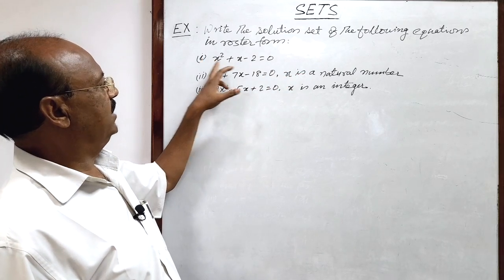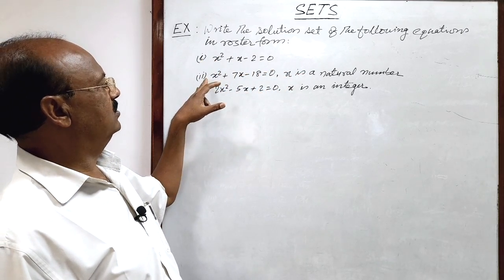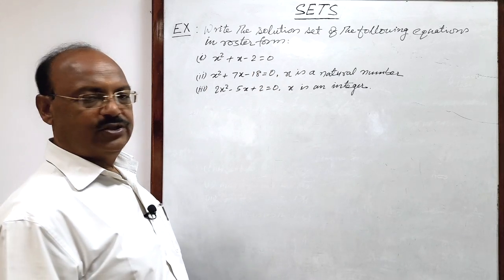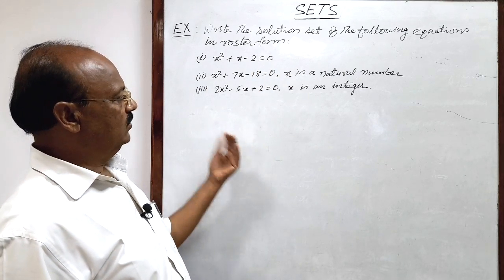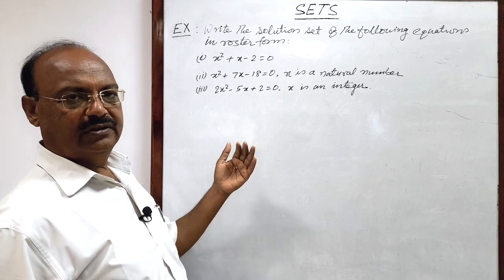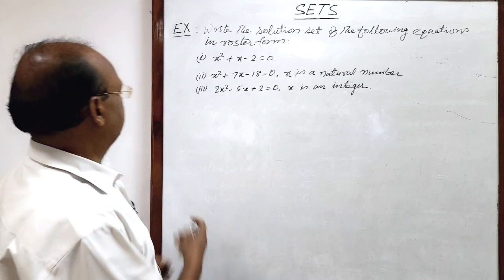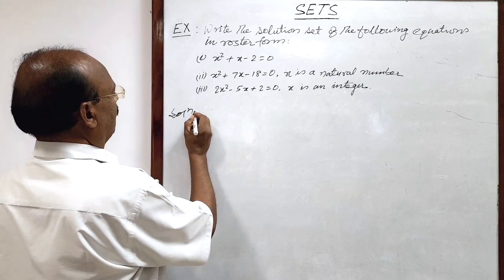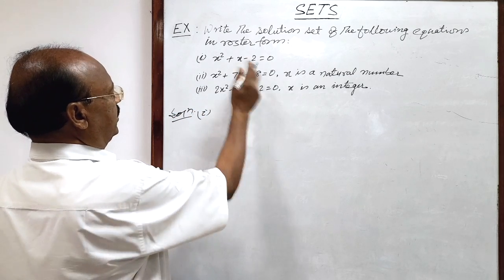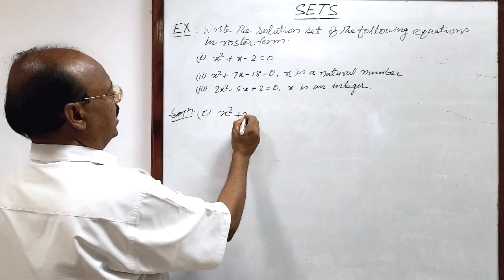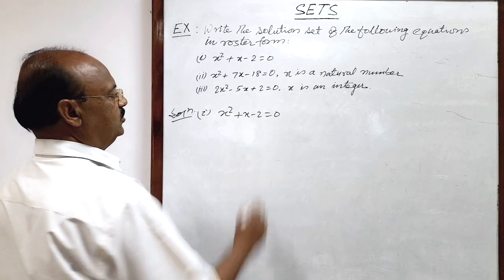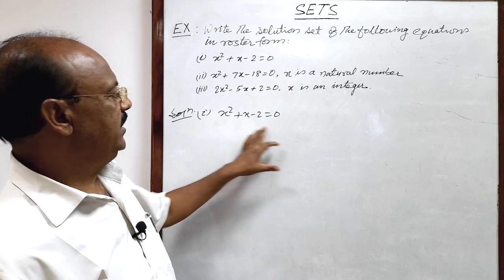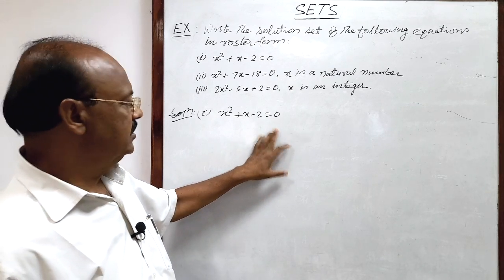The first equation is x squared plus x minus two. We will do them one by one and find out the solution set. The first quadratic equation is x squared plus x minus two is equal to zero. We can factorize this quadratic equation by splitting the middle term very easily.